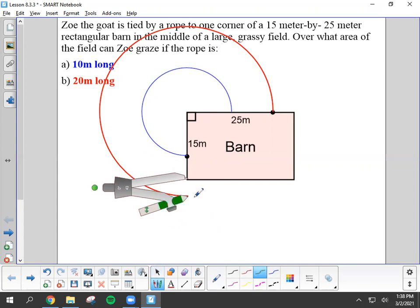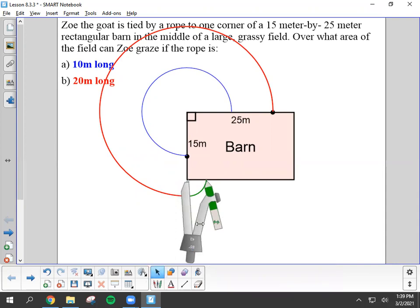And that I'm going to change the color to green here for you. That five meters is now catching at the corner of the barn and making this little small sector of area that the goat can graze in.